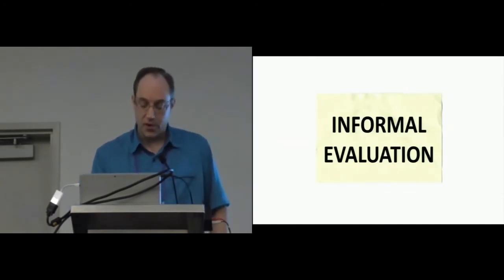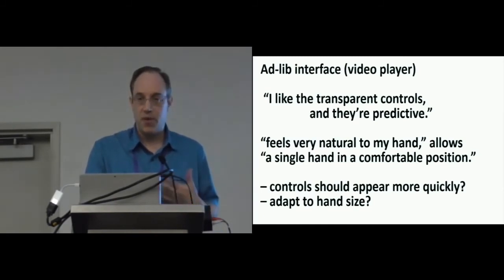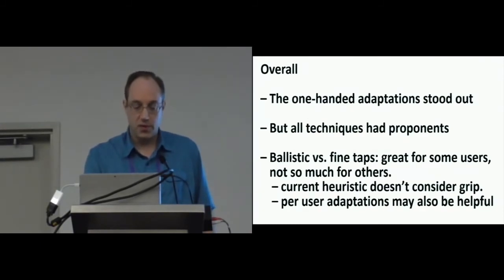So our evaluation was just a very informal one where we just basically had people try out the techniques and get some basic reactions. I don't really have time to go through that in detail, but for instance with the AdLib interface, we got a lot of comments of things like, I like the transparent controls and they're predictive of where my finger's approaching. Or that it feels very natural to my hand and allows a single hand in a comfortable position. People especially gravitated towards that one-handed use case. They felt that they really appreciated the device could kind of meet them in the middle there and not make them stretch across the whole device to reach something. We did get some other comments, like some people felt that the controls should perhaps appear a bit more quickly. We also had, for instance, there was one user that had fairly large hands, and when he reached onto the screen one-handed, he tended to land more towards the center, and the controls sort of appear at this default position near the edge. So potentially you could attempt to adapt to the hand size, but that might require a more precise prediction of where you actually expect the user to land than we're currently generating.